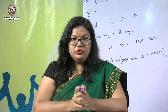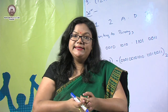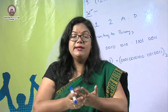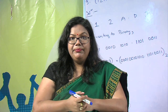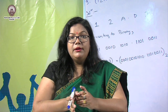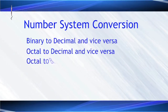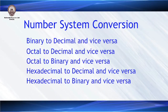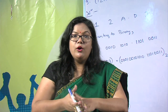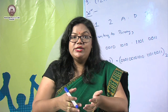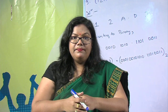So learners, today in this video we have learned about the number system — the different types: binary, decimal, octal, and hexadecimal. We have also learned how to convert a number from one number system to another, for example from binary to octal, decimal, or hexadecimal. In the next video, we will learn about binary arithmetic operations: addition, multiplication, subtraction, and division using binary digits. Thank you.